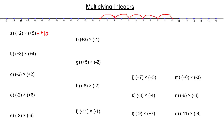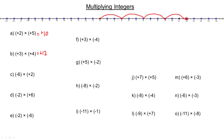Next one is positive 3 times positive 4. Positive 3 would be that, and if I'm multiplying it by 4 I'm doing that four times — a second time, third time, a fourth time — so I'm at positive 12. That would multiply to positive 12.